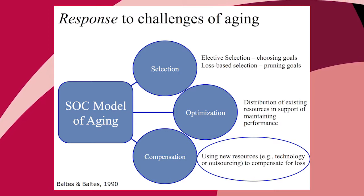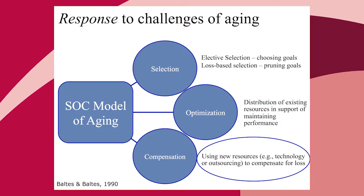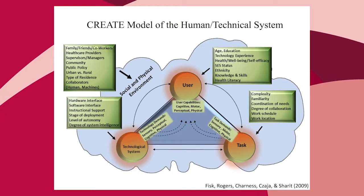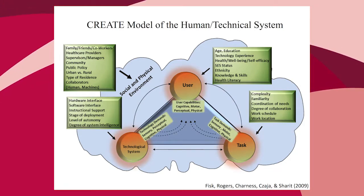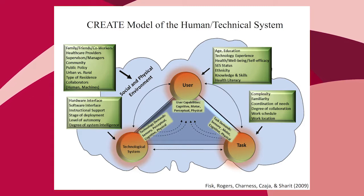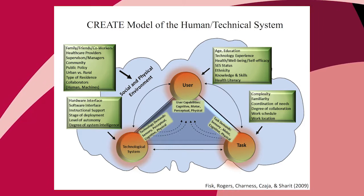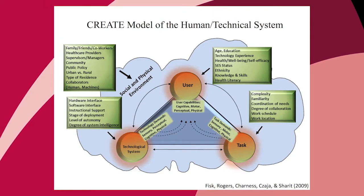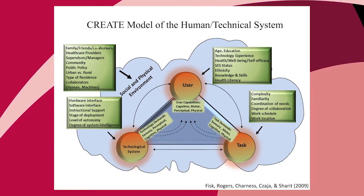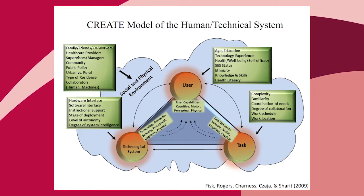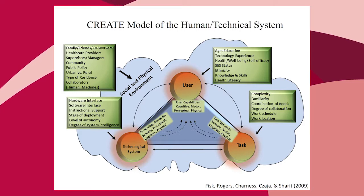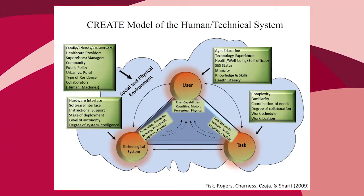If we're designing technology to enable individuals to deal with limitations, that's challenging. In the CREATE group we developed a model of the human-technical system, requiring us to think about the whole context: the user brings individual characteristics resulting in certain capabilities; the task imposes demands through its complexity or familiarity; and the technological system itself — hardware, software, instructional support — also imposes demands. All of these must match.